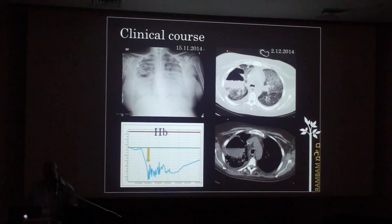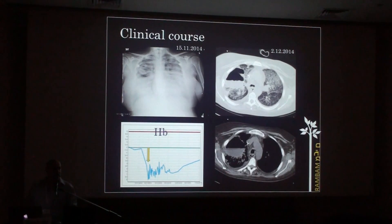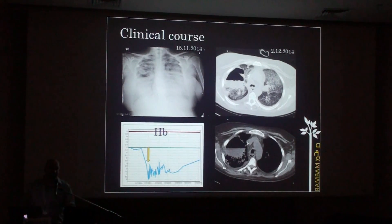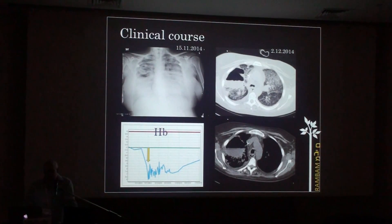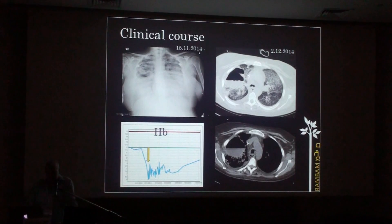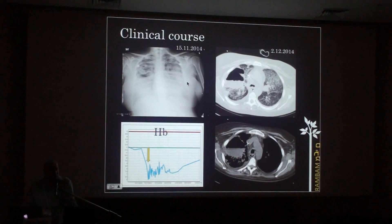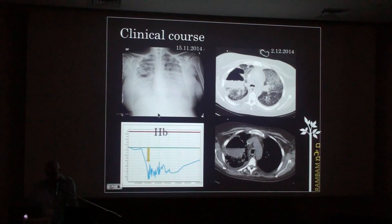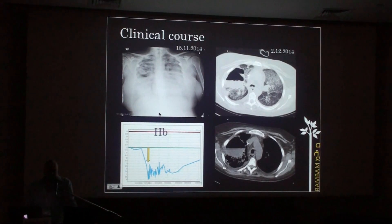This was during her hospitalization, which was a difficult course. When she arrived to the ED the second time with renal insufficiency, Wegener's granulomatosis with polyangiitis was diagnosed, and she was started on steroid therapy and immunosuppressive therapy. A few days later she developed diffuse alveolar opacities and significantly decreasing hemoglobin, visible on the chest radiograph, along with hemoptysis — all signs of diffuse alveolar hemorrhage.